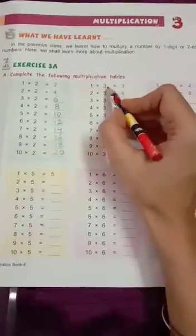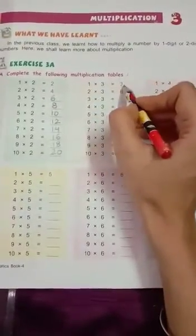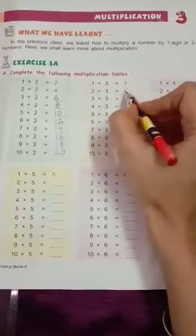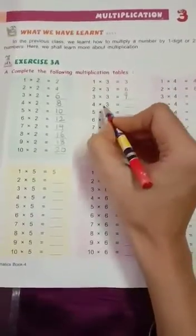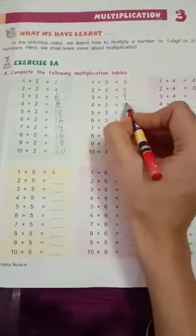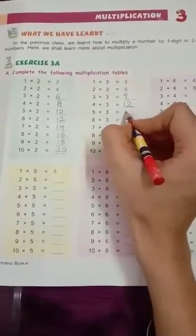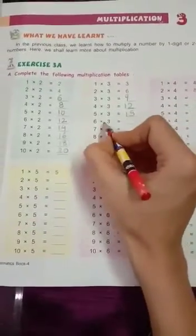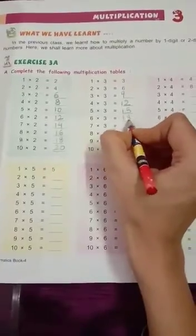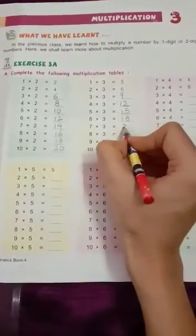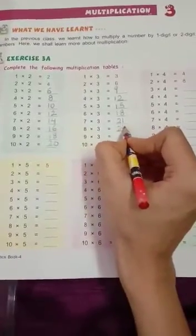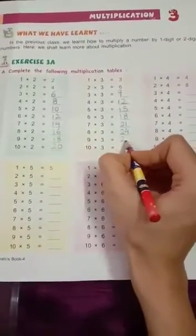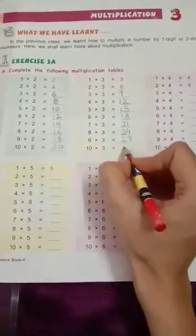Now table of 3. 3 ones are 3, 3 twos are 6, 3 threes are 9, 3 fours are 12, 3 fives are 15, 3 sixes are 18, 3 sevens are 21, 3 eights are 24, 3 nines are 27, 3 tens are 30.